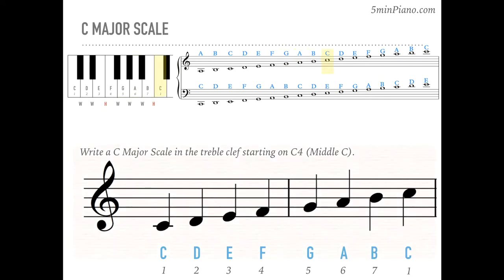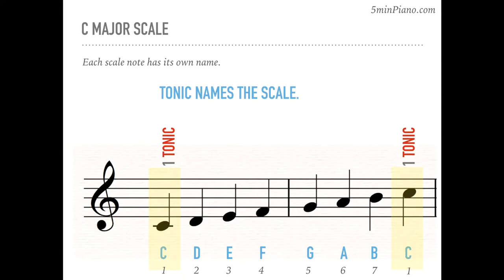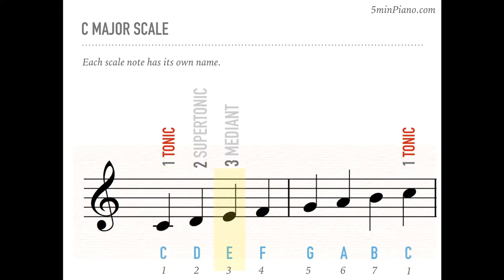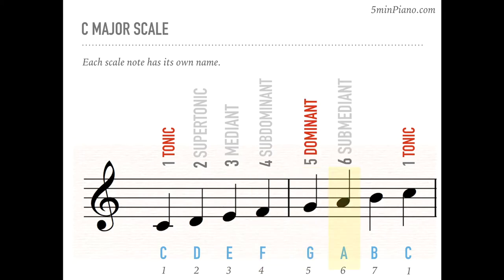Each scale note has its own name. The first note is tonic, which names the scale. It is also the last note of the scale — in this case both C. The second scale note is called the supertonic. The third is the mediant. Fourth is the subdominant. Fifth is the dominant. Sixth, submediant. Seventh is the leading tone. And then we're back to the tonic.